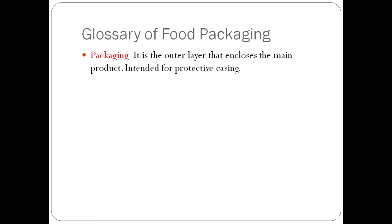Let's start with very basic things: packaging, packing, and basic packing materials. You know that packaging and packing might look similar but they have a vast difference. The term packaging is the outer layer that encloses the main product — it is intended for a protective casing. Consider coffee chocolates: they may have an inner wrap in white paper. That inner wrap is packing, and the outer covering is packaging.